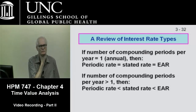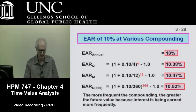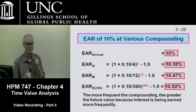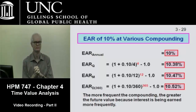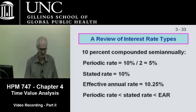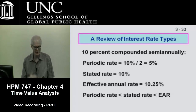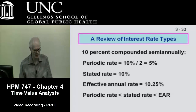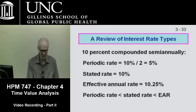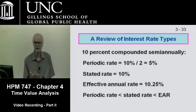A quick example: a student asks whether 10.52% annually is the same as a 10% daily rate. The answer is yes — if you have two investments, one at 10% compounded daily and another at 10.52% compounded annually, those are exactly the same investments. For 10% compounded semi-annually: the periodic rate is 5%, the stated rate is 10%, and the effective annual rate is 10.25% — confirming that the periodic rate is less than the stated rate, which is less than the effective annual rate.